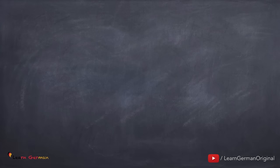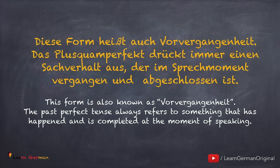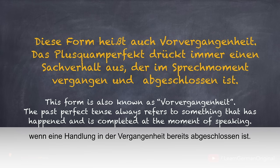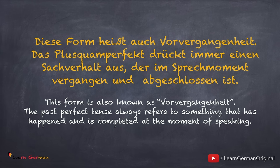Was ist Plusquamperfekt? Diese Form heißt auch Vorvergangenheit. Das Plusquamperfekt zeigt etwas, das im Sprechmoment vergangen und abgeschlossen ist. Das heißt, diese Zeitform wird normalerweise nur benutzt, wenn eine Handlung in der Vergangenheit bereits abgeschlossen ist. This tense is normally only used when an action has already been completed in the past.